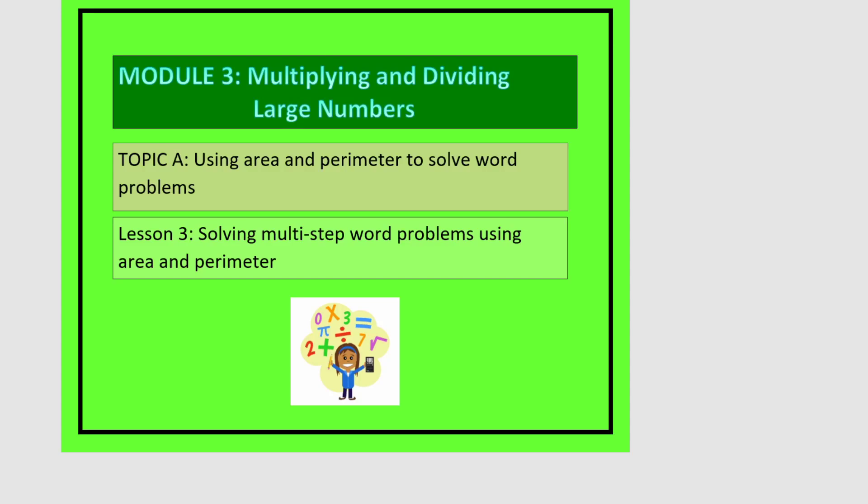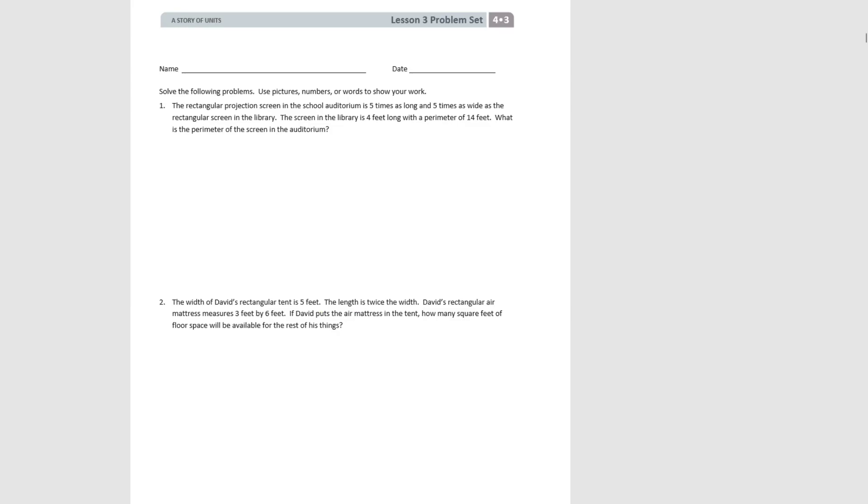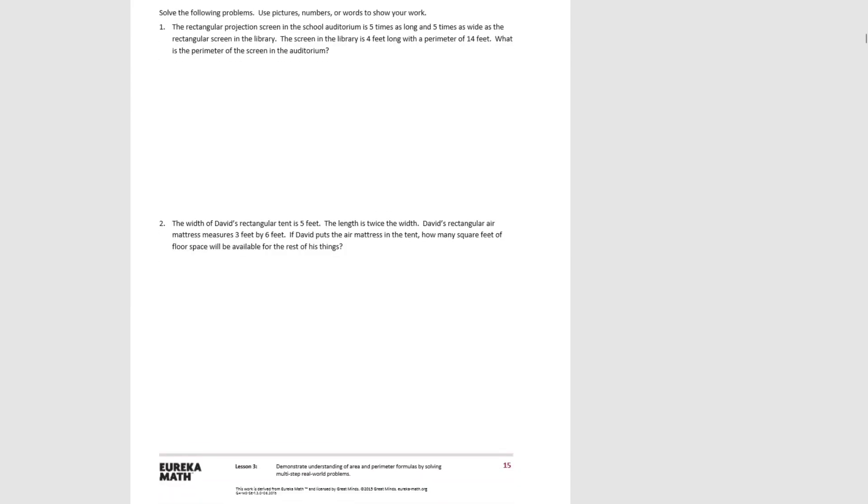This is lesson three in module three, and in this lesson we're going to be solving multi-step word problems using area and perimeter. For this lesson, we're going to go directly to our problem set. Let's look at number one and do that one together. This says solve the following problems using pictures, numbers, or words to show your work.